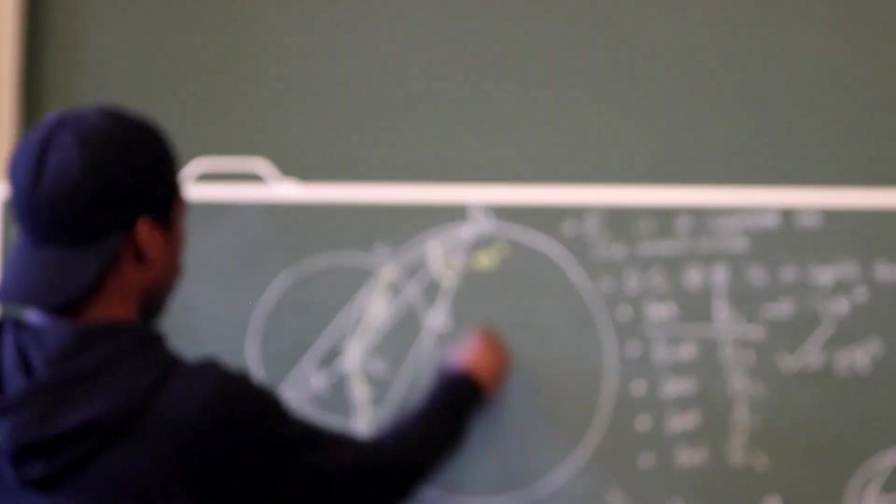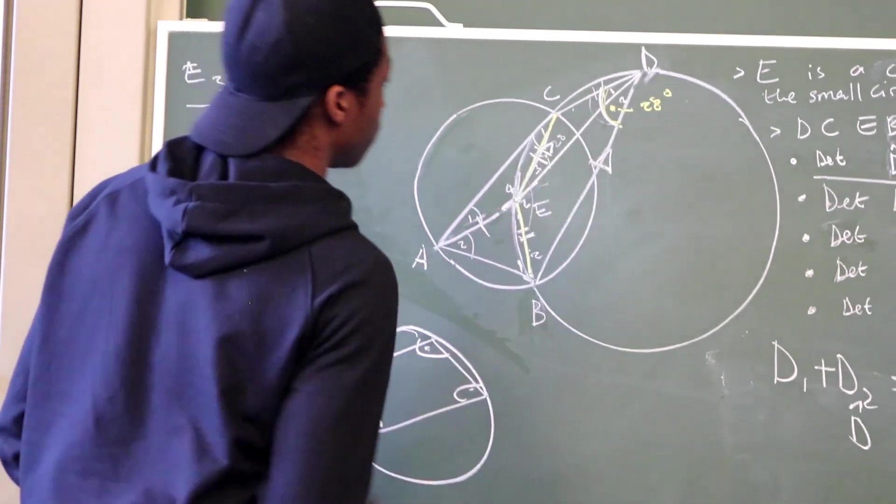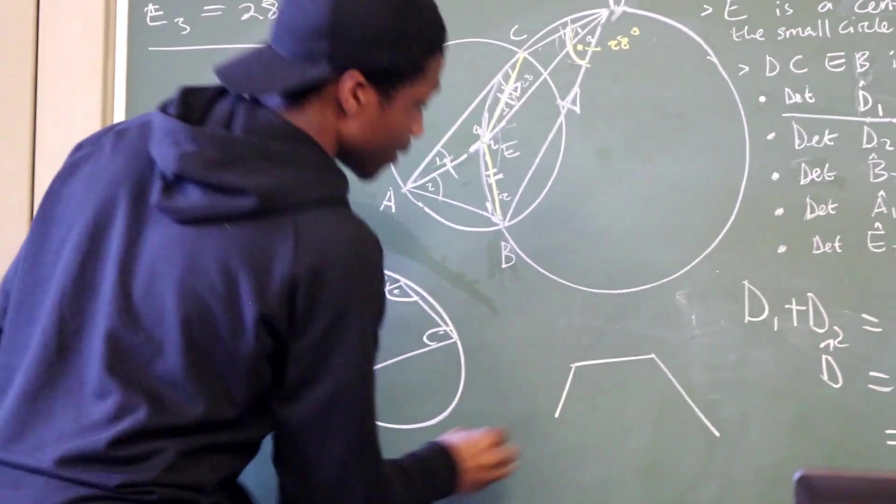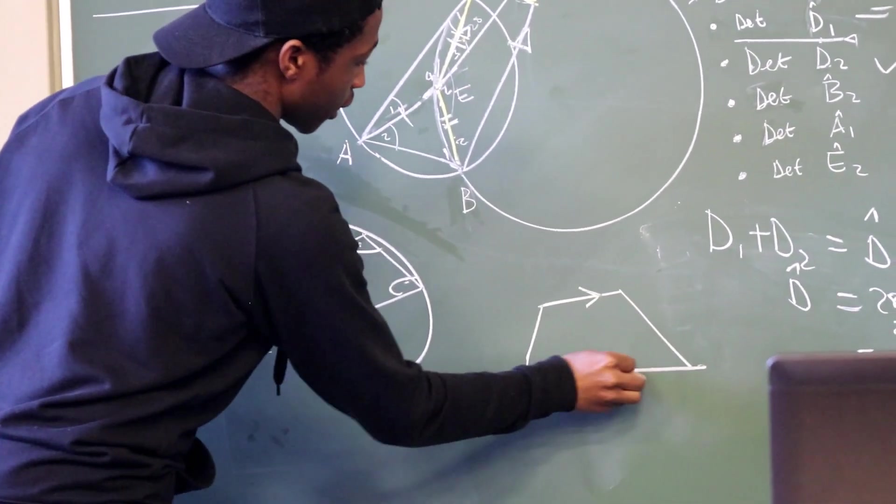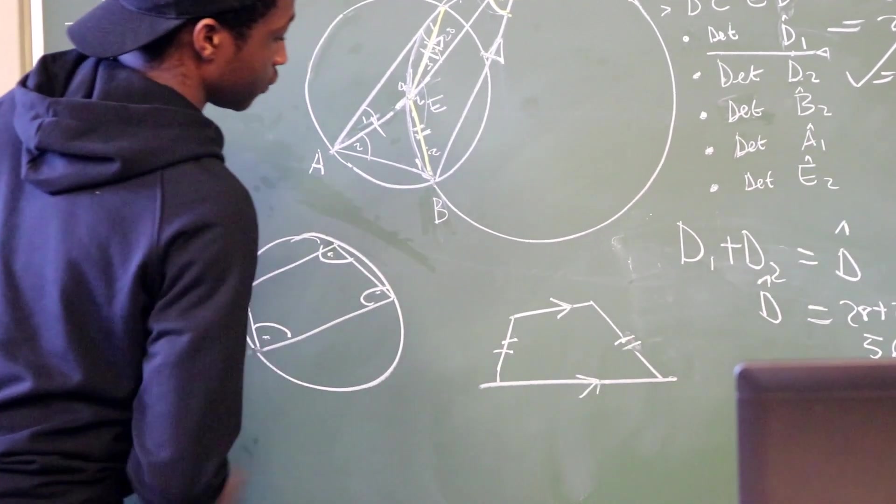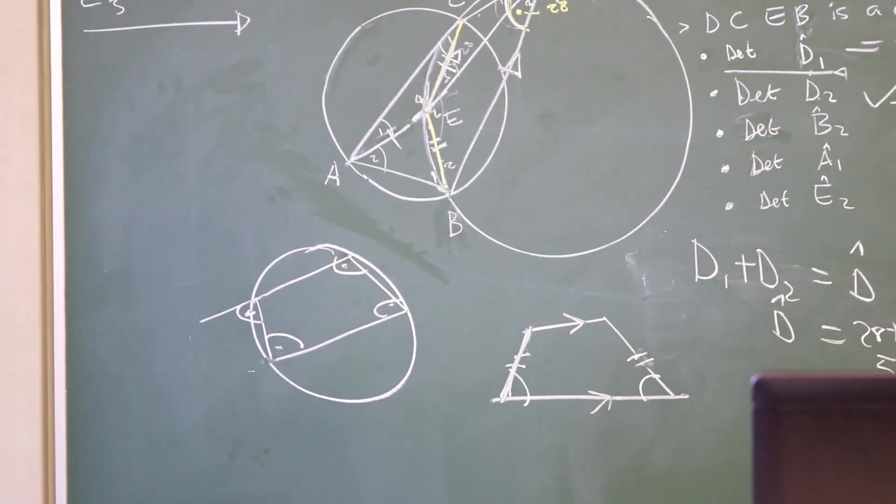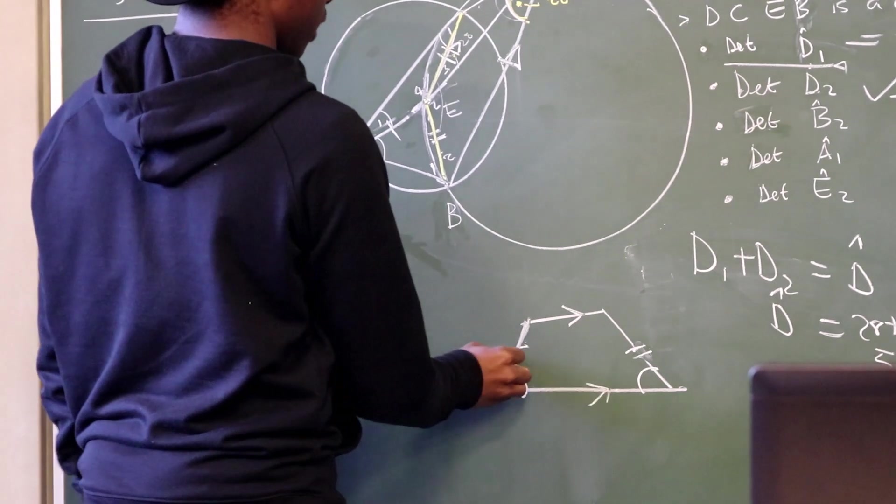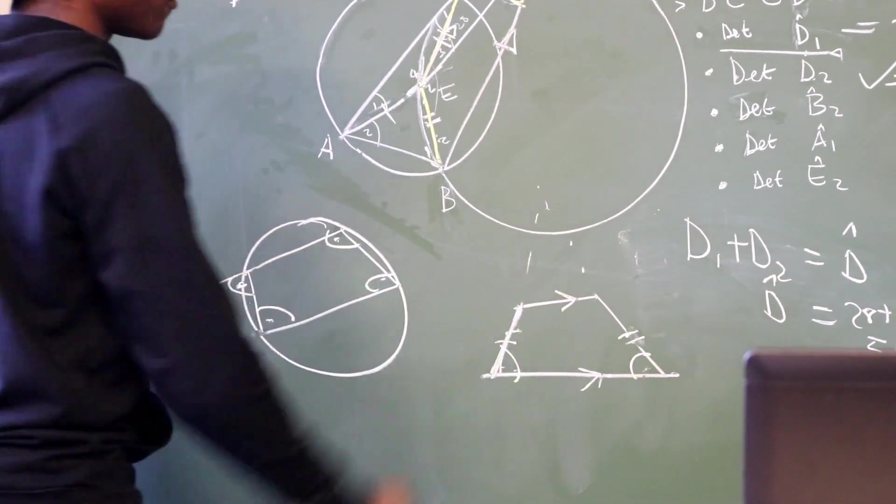And we know that the opposite angles of a cyclic quad add up to 180 degrees. And also, if we are given this shape, this is a trapezium. We find these lines are parallel. These lines are equal. These base angles are also equal.